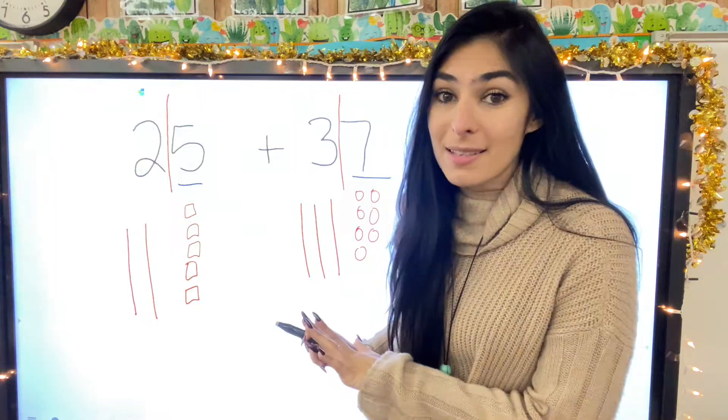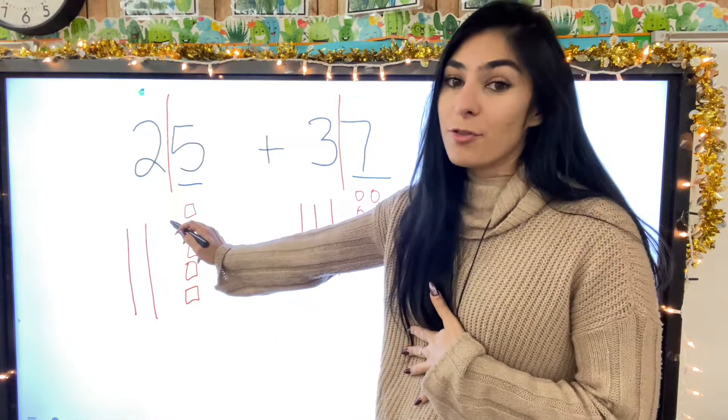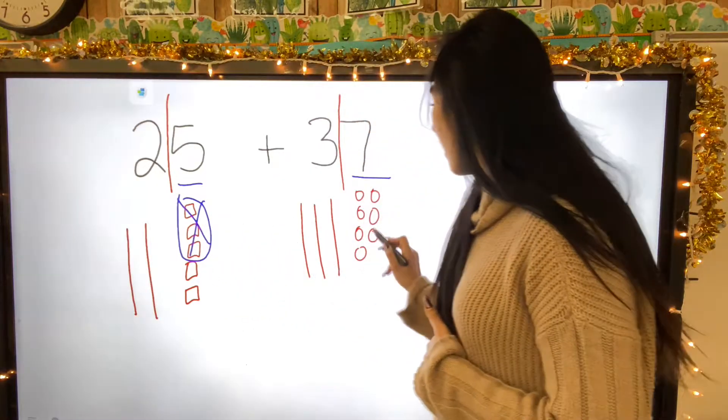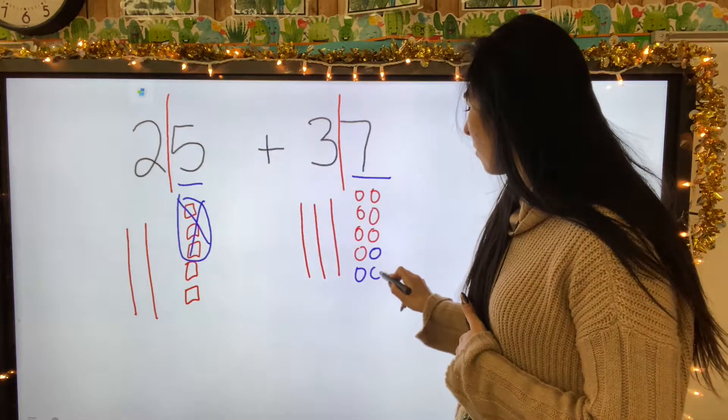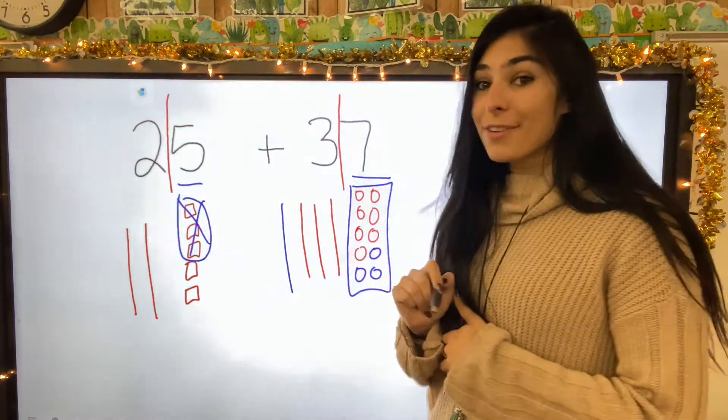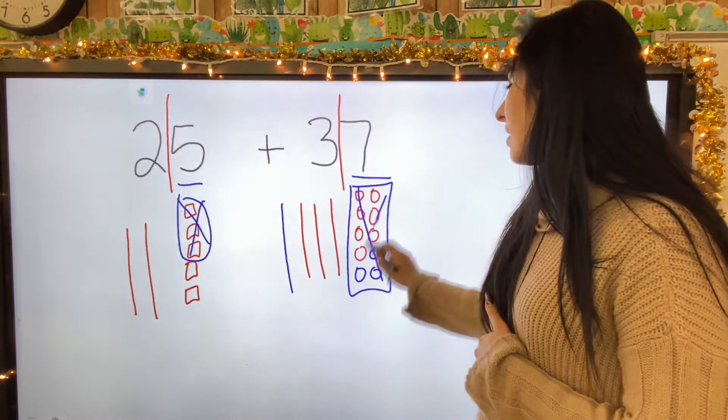So go ahead and show me seven on your hands. How many more do we need to reach ten? One, two, three. So since I need three pieces to make my ten, I'm going to borrow those from the five. Here's three. Cross those out. Add them over here. Ding, ding, ding. I unlock my secret ten so I can cross these out. I don't need that anymore.